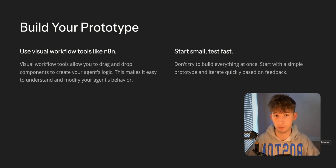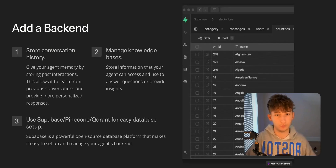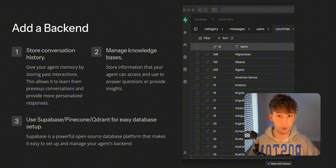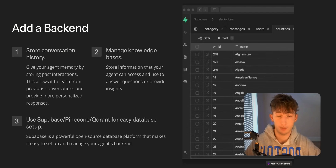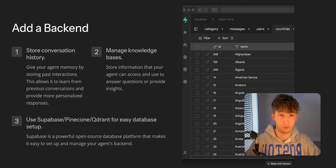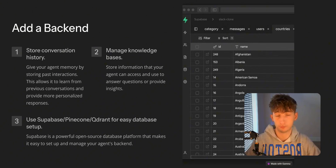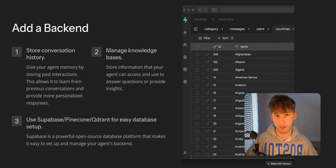Now that you have a basic prototype working, the next step is to give your agent a brain — adding the backend for data. For your agent to be truly useful, it needs to store and access data. This can include user inputs and queries, generated responses, or information pulled from external sources. Why does a backend matter? Let's say you're building a chatbot. Without a backend, the bot can only handle one interaction at a time and won't remember past conversations. With a backend, you can store conversation history to make interactions feel more natural, keep a knowledge base for answering complex questions, and log analytics to improve performance over time. In N8N, this is essentially called the memory.